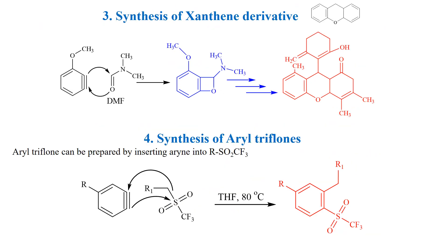Benzyne is used to prepare xanthine derivatives. Xanthine is used to prepare fluorescein, eosin, and rhodamine dyes, which are fluorescent and are of different colors. It can be prepared by the reaction of methoxy benzyne with dimethylformamide via a 2+2 cycloaddition reaction. The xanthine derivatives are prepared by a multi-step reaction.